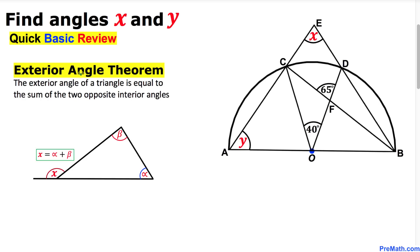Now let's go over the exterior angle theorem. The exterior angle of a triangle is equal to the sum of the two opposite interior angles. We can see that angle x is our exterior angle and that is equal to the sum of these two opposite interior angles alpha and beta.